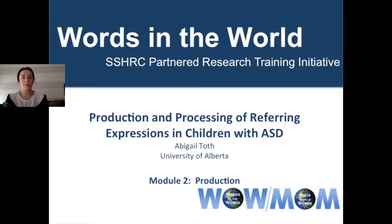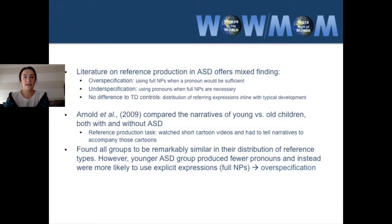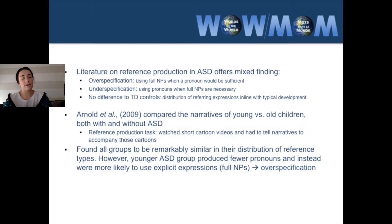I'm going to talk about the production side of referring expressions in children with ASD. The literature on reference production in ASD offers mixed findings, with evidence for over-specification — using a full noun phrase when a pronoun would be sufficient — as well as under-specification — using a pronoun when a full noun phrase is necessary — and also no difference compared to TD controls, where the distribution of referring expressions is in line with typical development.